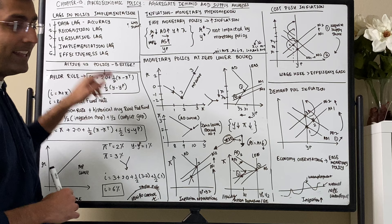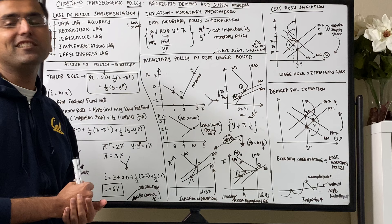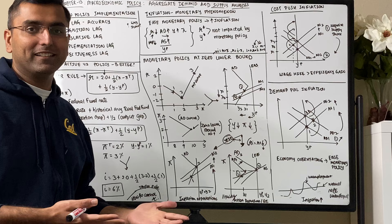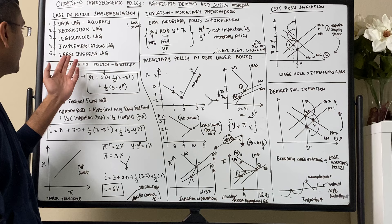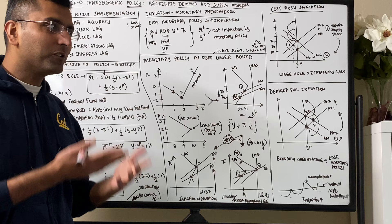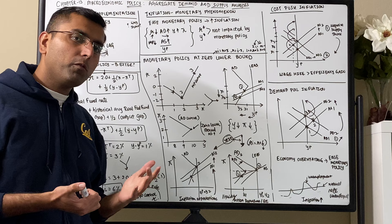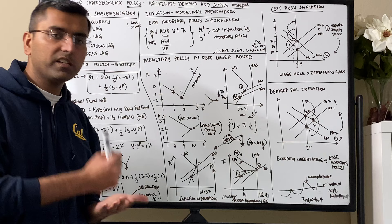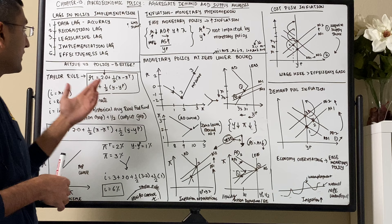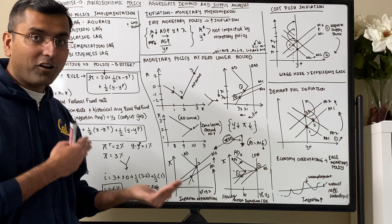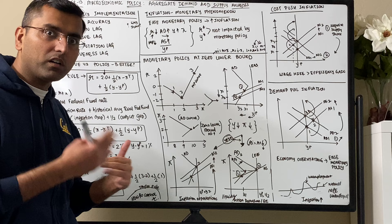Once you recognize a problem and decide to act, there is an implementation lag — it takes time to implement, and by the time it reaches people, it may already be too late. And then there's an effectiveness measurement lag: you don't really know if it's working, or whether effects stem from something done 5 or 10 years ago. All of these lags can be a major con for activist policymaking — the government could just be acting in hindsight. But lags also suggest that passive non-activist policy is worse.